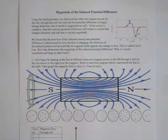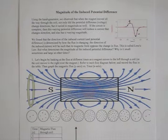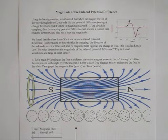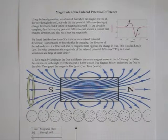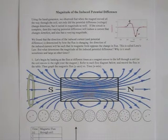Reading through the top part of this sheet: because using the hand generator we observed that when the magnet moved all the way through the coil, not only did the potential difference or voltage change directions, but it varied in magnitude as well. If the circuit is complete, then this varying potential difference will induce a current that changes direction and also has a varying magnitude.